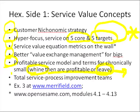To make the big six, seven, or eight service value equation metrics happen, we have different service process improvement teams — and who are they, how does that work, and where are the charts to show our continuous improvement?